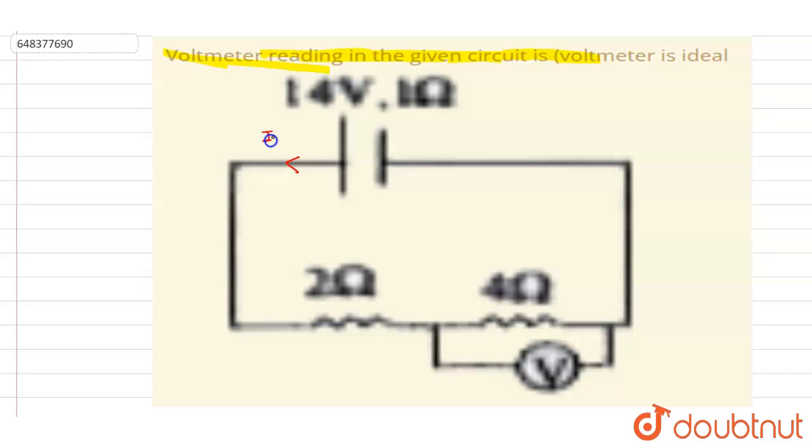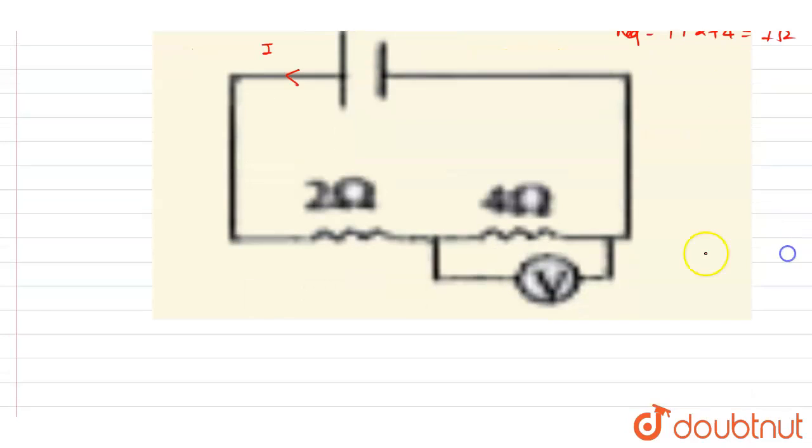First of all, we'll write down the R equivalent. There are three resistances connected in series: one ohm, two ohm, and four ohm, so it will be seven ohm, right?